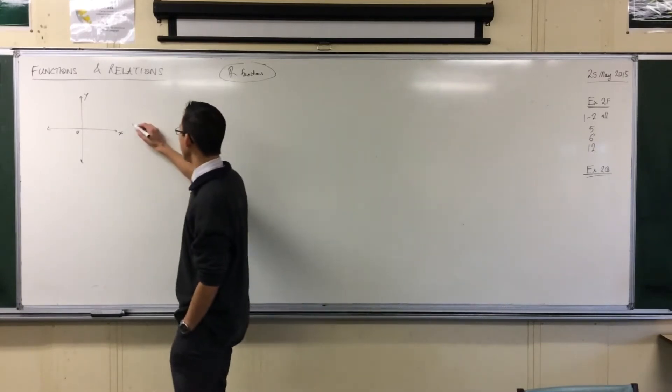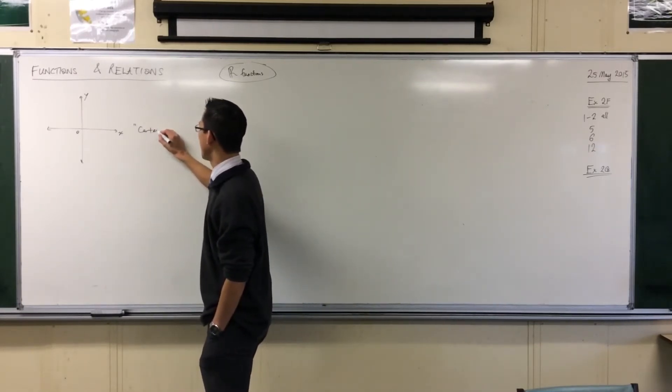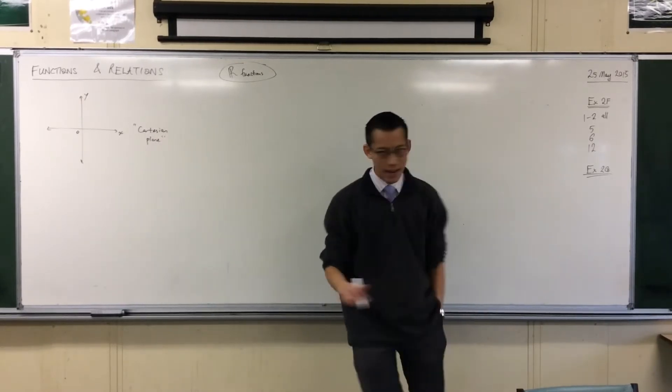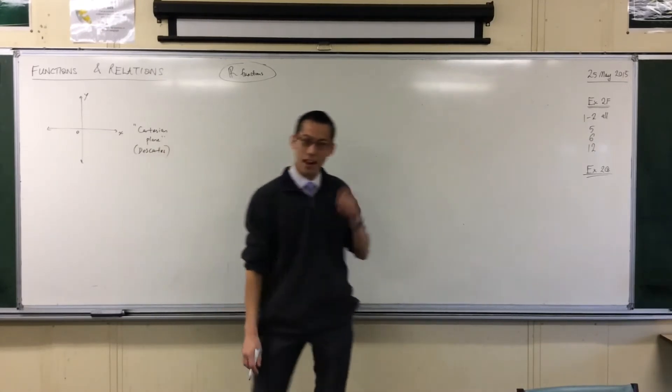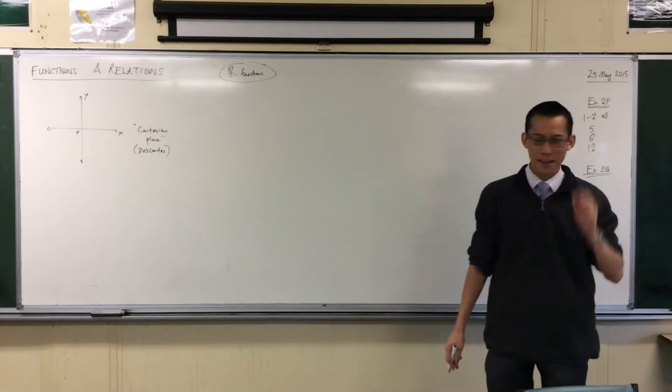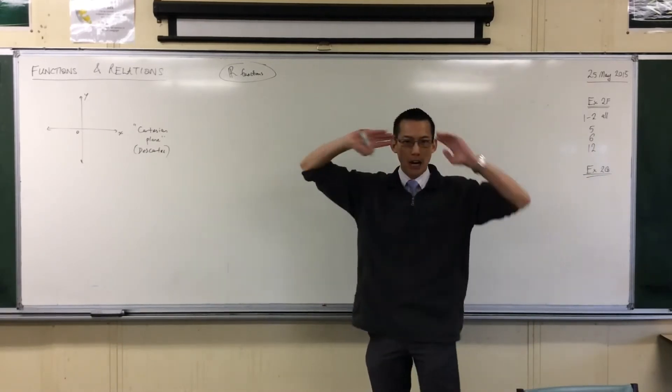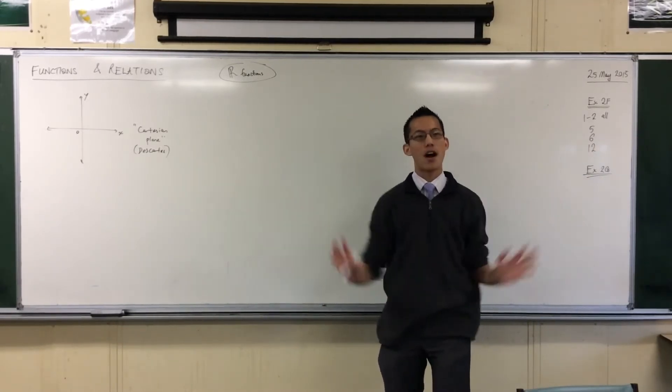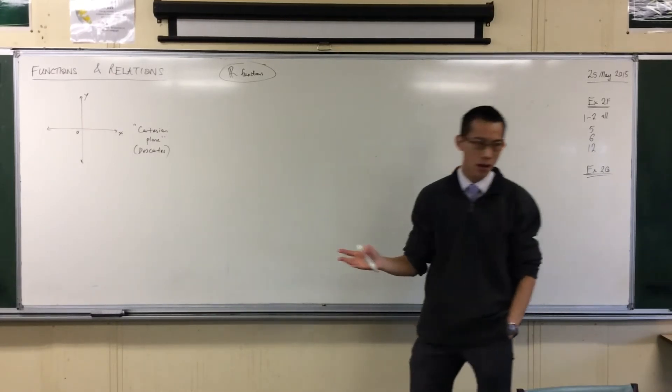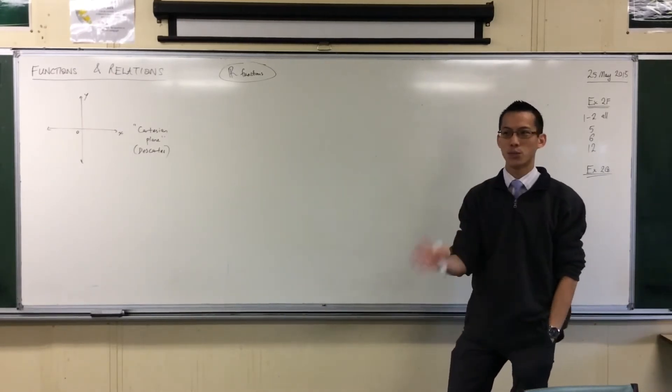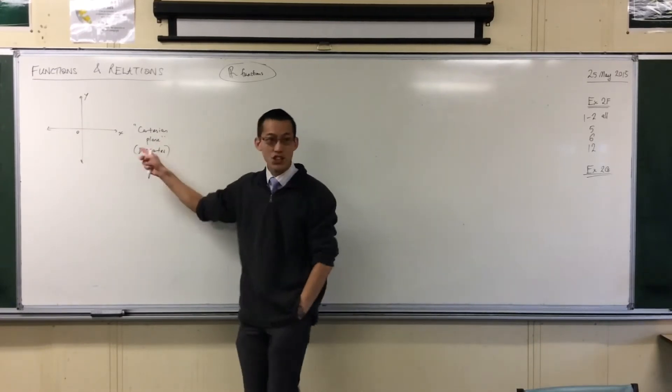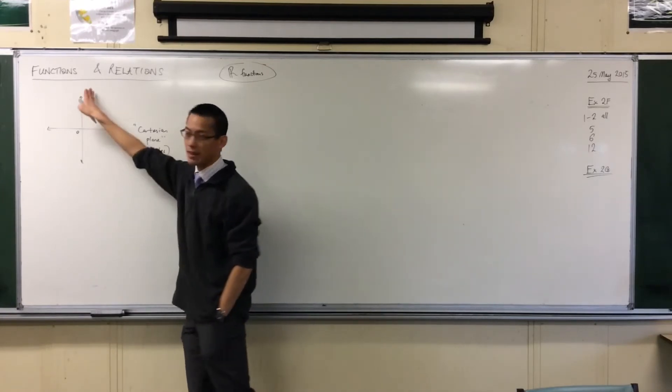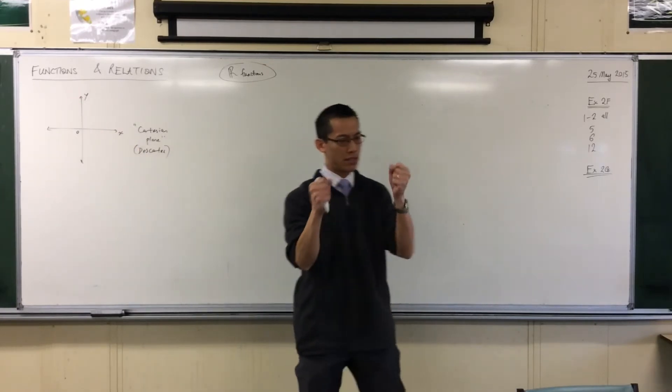Now, this is the Cartesian plane, which is named after René Descartes, who is most famous for saying, I think, therefore I am. It's French. You guys have known about the Cartesian plane for so long. It is impossible for me to overstate what a revolution it was to have the Cartesian plane, to have it as a relationship between x's and y's, two sets of real numbers.